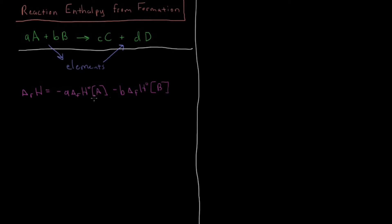That's the enthalpy of this step here, and then I want to take those elements and form C and D. So that's equivalent to saying the enthalpy of formation of C moles of C and D moles of D. That will be plus C times enthalpy of formation of C plus D times enthalpy of formation of compound D.